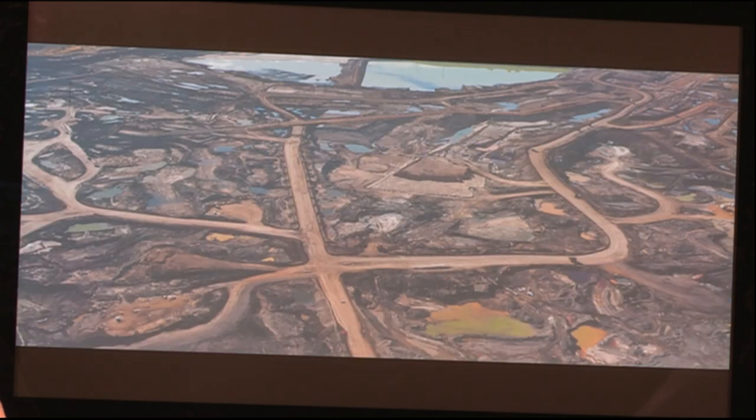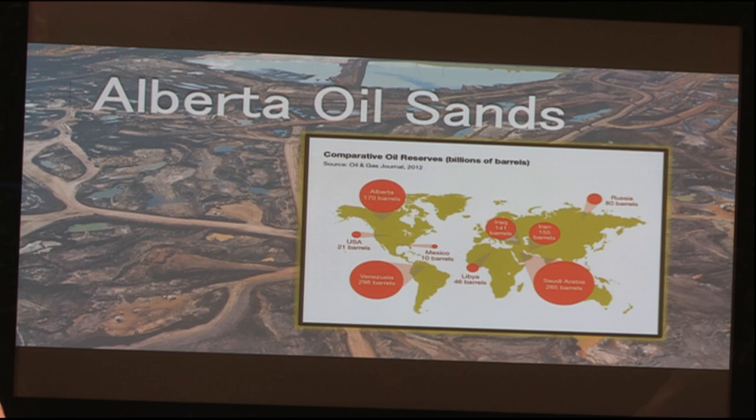The oil comes from Alberta, Canada, home to the third largest oil refinery in the world, behind Saudi Arabia and Venezuela. Oil sands production is expected to increase from 1.9 million barrels a day in 2012 to 3.8 million barrels a day in 2022. With this increase in production, more oil would be brought into the United States — an increase in supply. When we see an increase in supply, we see a decrease in price at the pump. But in the long run, the U.S. becomes more dependent on oil rather than seeking cleaner energy sources.